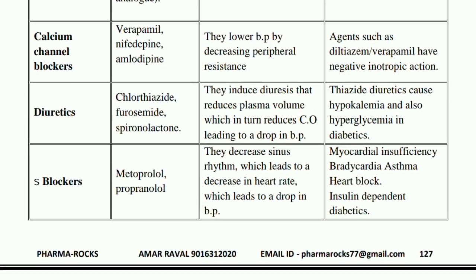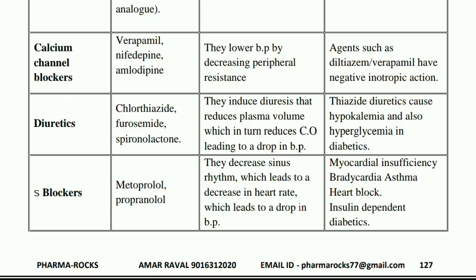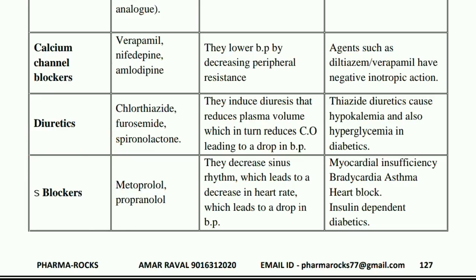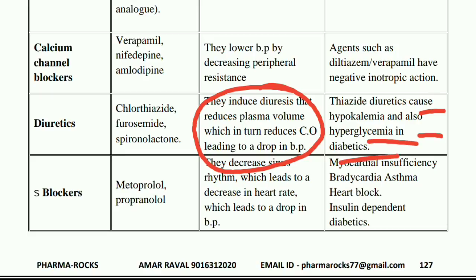Next are the diuretics used as antihypertensives. Examples are chlorothiazide, furosemide, and spironolactone. They induce diuresis, which reduces plasma volume, which reduces cardiac output (CO), leading to a drop in blood pressure. Thiazide diuretics cause hypokalemia and also hyperglycemia in diabetes — aapko dhyan rakhna hai.